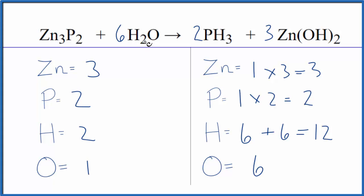Two times six gives us 12 hydrogen atoms. One times six, six oxygen atoms. This equation is balanced.